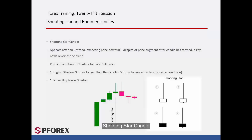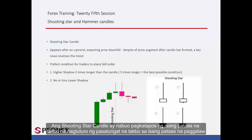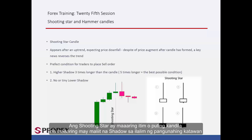The Shooting Star Candle is formed after an upward trend and indicates a reversal trend on an upward movement. It can be either a black or white candle which may have a tiny shadow under the main body.